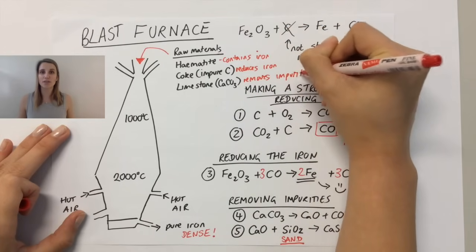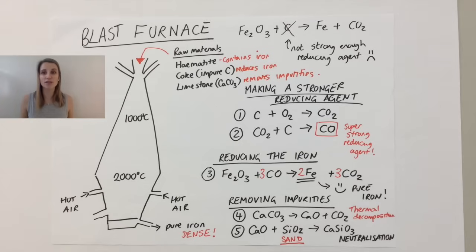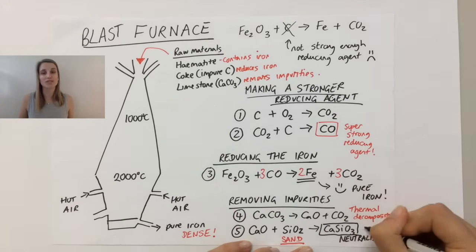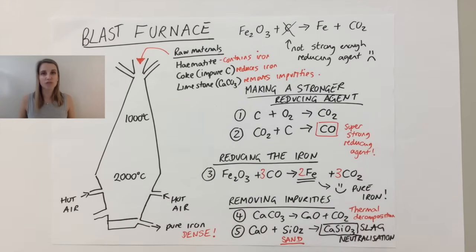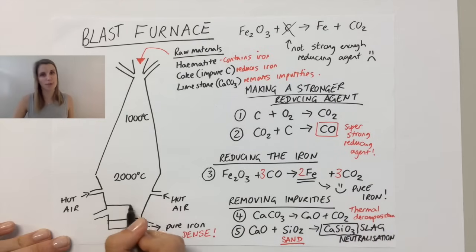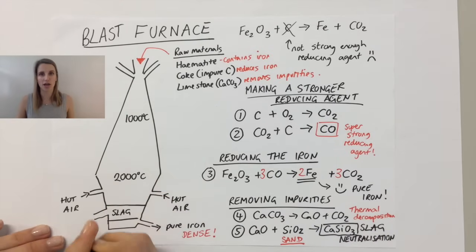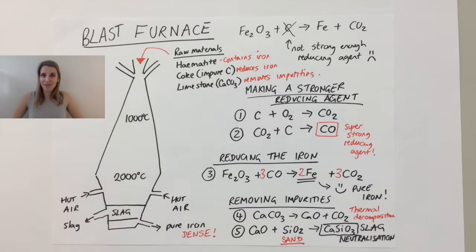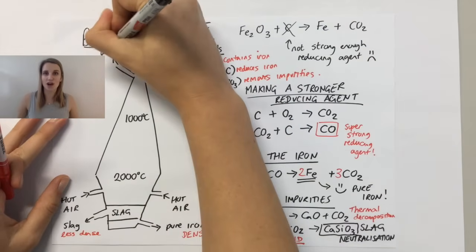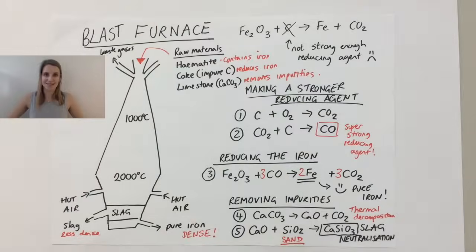Now these impurities come off as something called slag. So the calcium silicate is also called slag. And it comes off the blast furnace just above the iron because it's not as dense as the iron. The other part I haven't labeled is these two vents at the top, which is just where the waste gases are removed. Nothing more fancy than that.